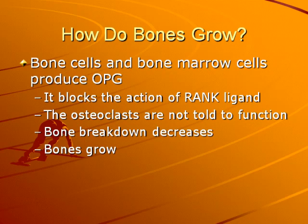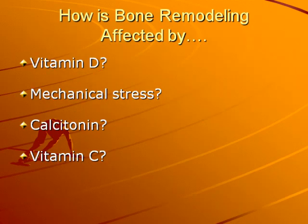Bone cells and bone marrow cells produce osteoprotegerin. It basically tells the osteoclasts not to function anymore. With the secretion of OPG, bone breakdown decreases and bones are stimulated to grow. Remember that vitamin C and vitamin D are necessary for bone formation. Mechanical stress stimulates osteoblast activity and stimulates the formation of the matrix.